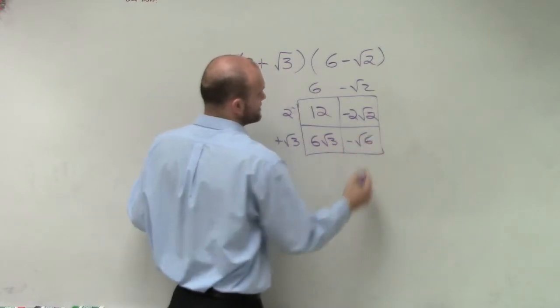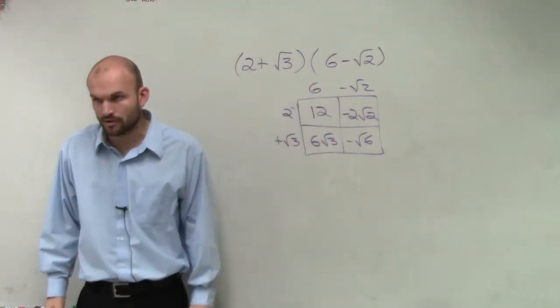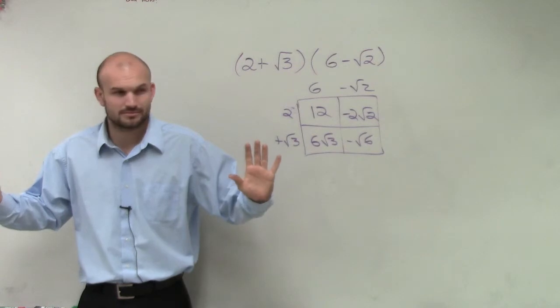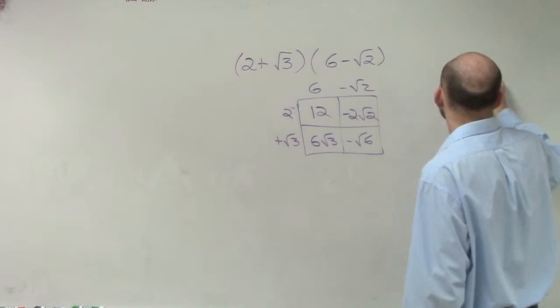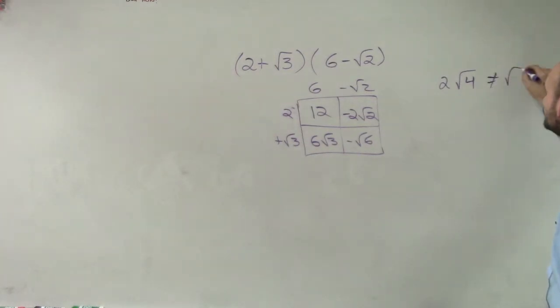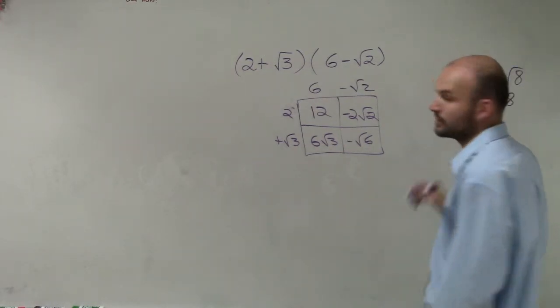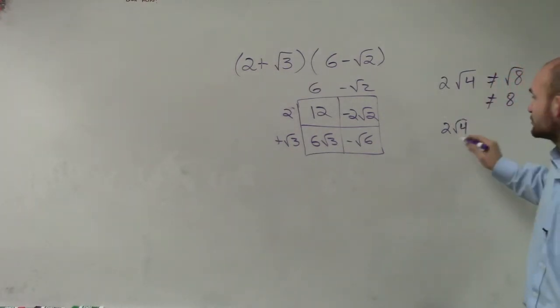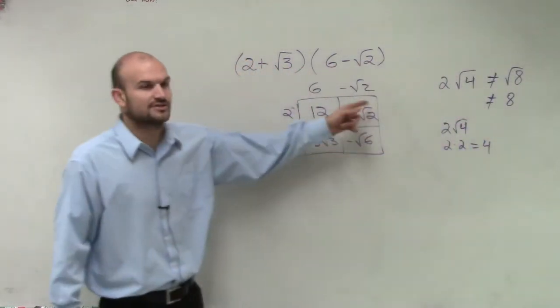Now remember, why can't you do 2 times square root of 4? So 2 times square root of 4 does not equal the square root of 8, nor does it equal 8. You can't multiply a number inside of a square root. 2 times square root of 4 is just 2 times square root of 4, unless you can simplify your square root, which in this case is 2 times 2, which equals 4. That's why I got those answers. I don't want students to multiply a number into a radical.